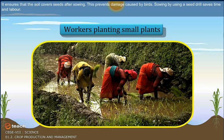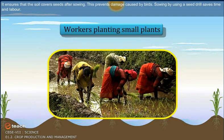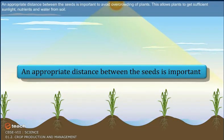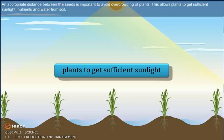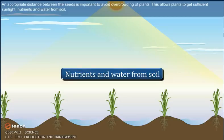This prevents damage caused by birds. Sowing by using a seed drill saves time and labor. An appropriate distance between the seeds is important to avoid overcrowding of plants. This allows plants to get sufficient sunlight, nutrients and water from soil.